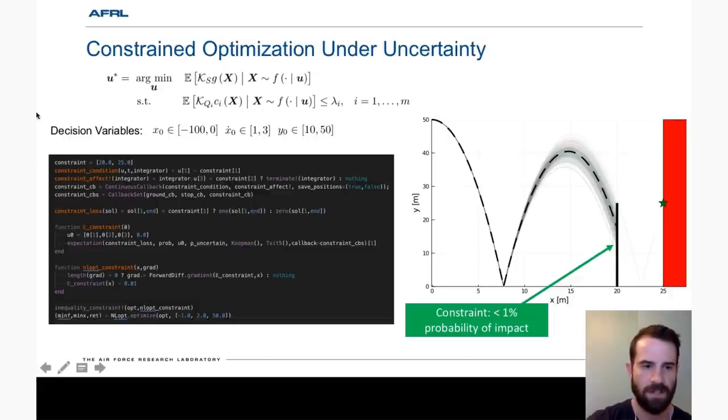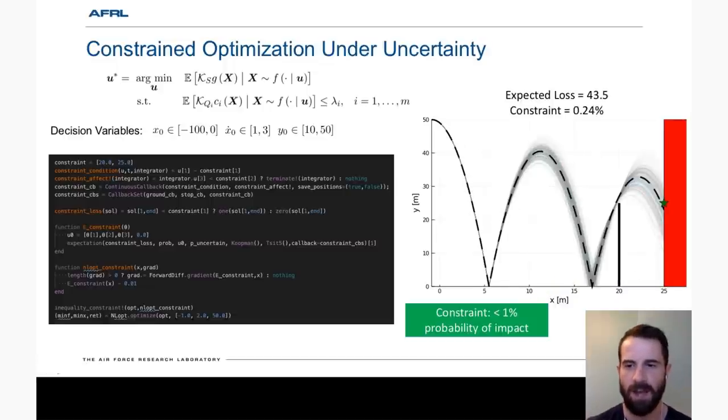So again, we set up the constraint, put it in the form for NLOPT with forward diff and add the inequality constraint. And we now arrive at the following solution. And notice how the solution puts the lowest uncertainty part of the trajectory as close to the wall to ensure that this constraint is met.